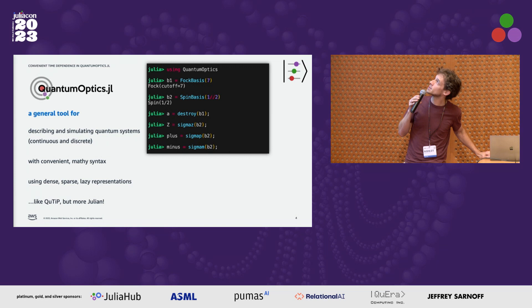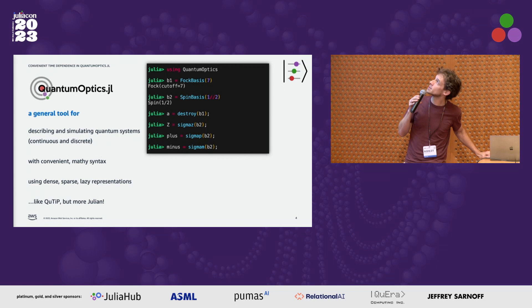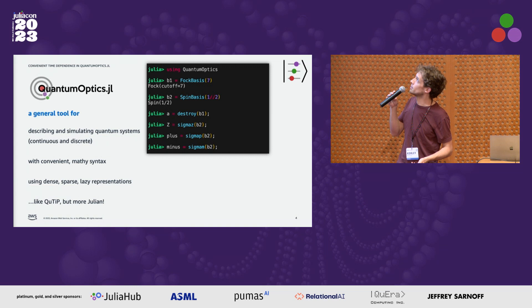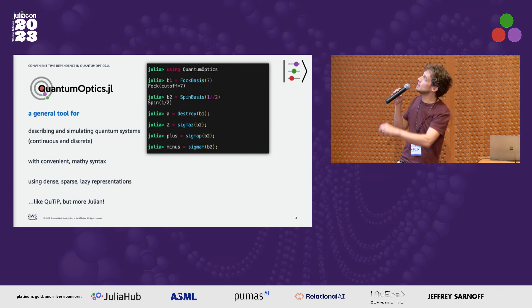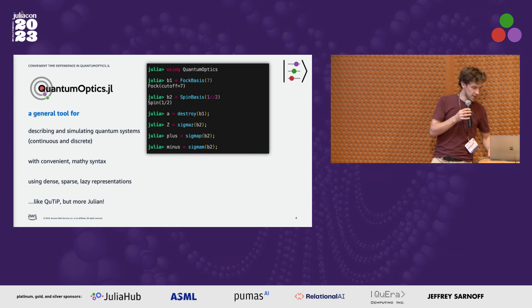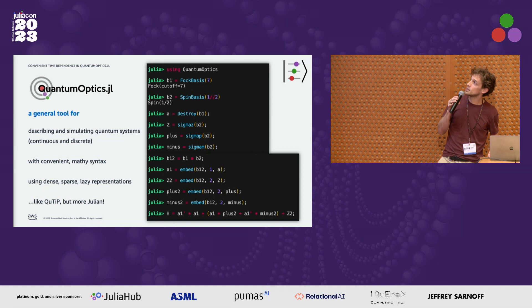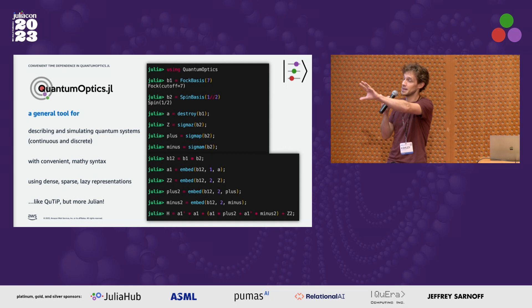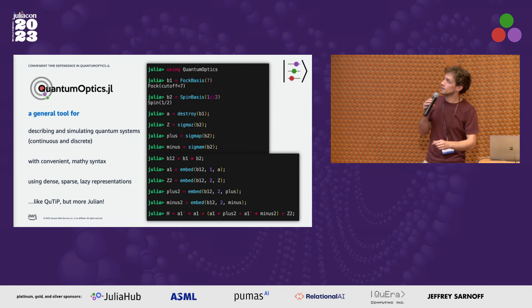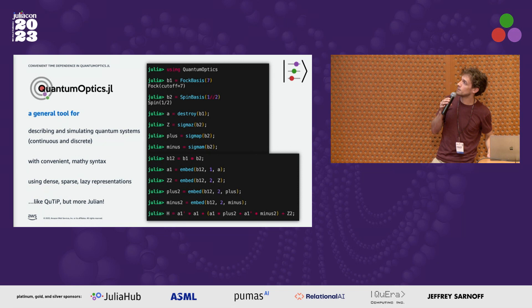To give you a feel for it, here's a very simple program. We use the package. We define a basis for our quantum system — here it's a combination of a Fock basis and a spin basis. We define some operators: a destruction or annihilation operator, a Pauli-Z operator, and sigma plus and minus. We define a composite system using a tensor product notation and embed all those operators into this larger Hilbert space to describe a composite system — maybe a resonator and a two-level system, like an atom. Then we define the Hamiltonian H, and it looks like what you'd write on a blackboard.